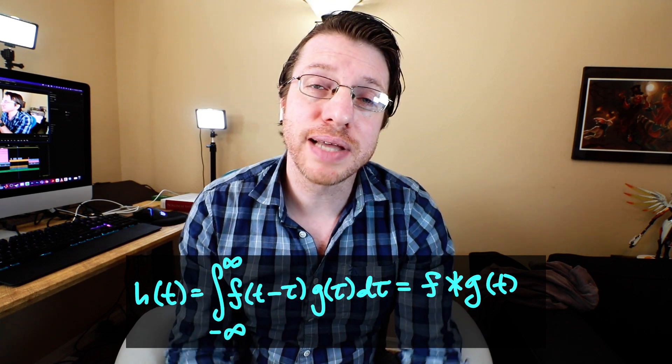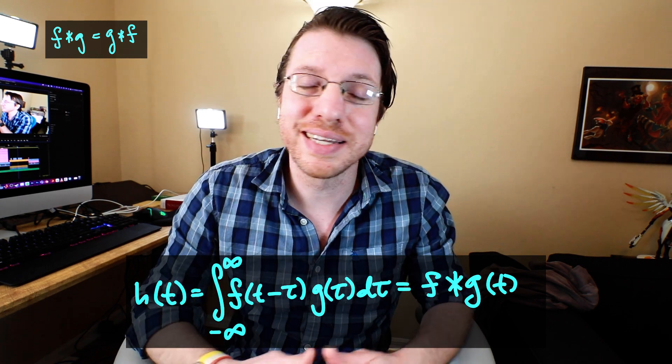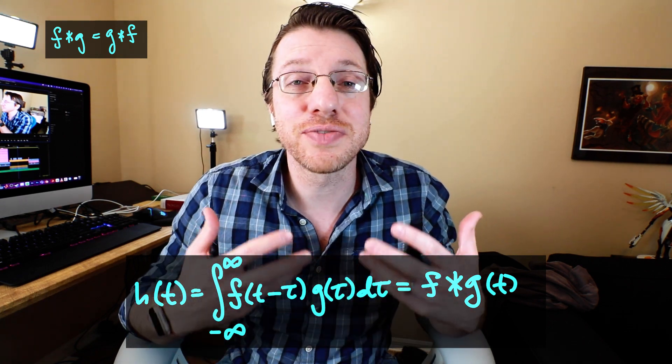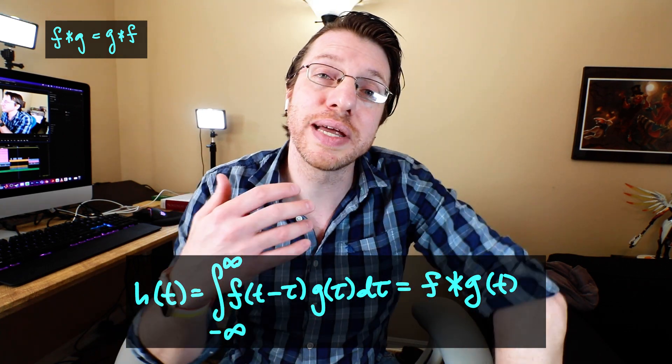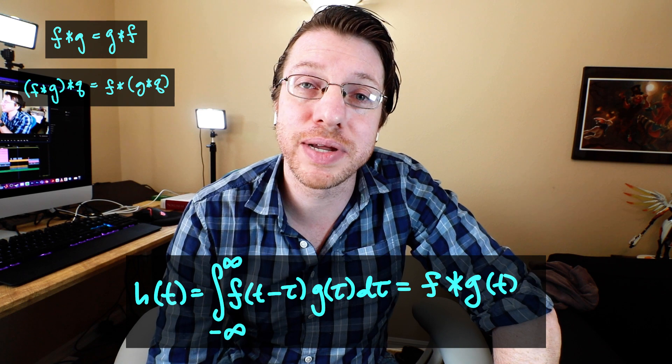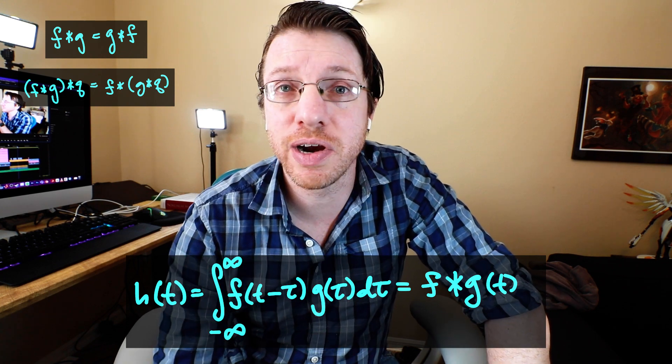It turns out that f★g is the same as g★f, meaning we satisfy a commutativity property. There's also an associativity property that you can verify with just a change of variables.